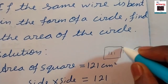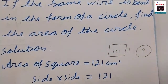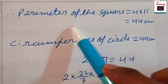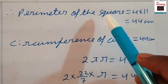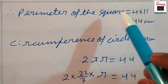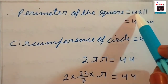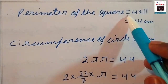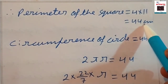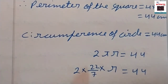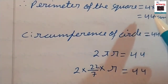The square has 4 sides, each of length 11 cm. So the perimeter equals 4 into 11, which gives 44 cm. This perimeter becomes the circumference of the circle.